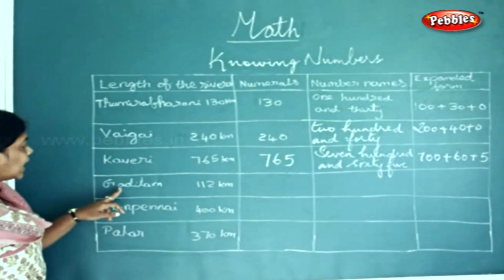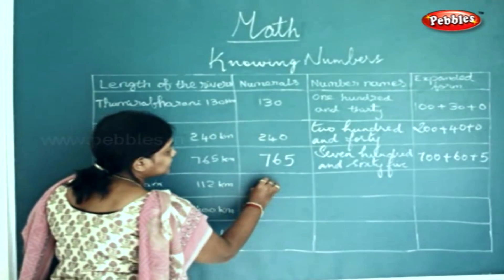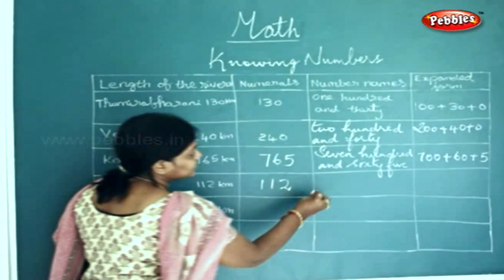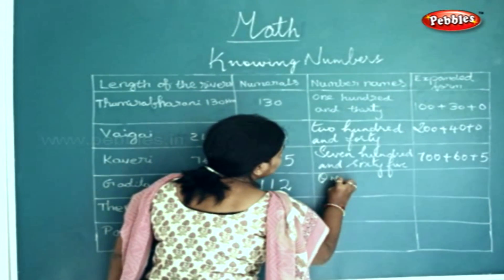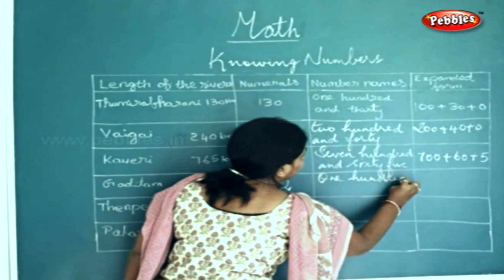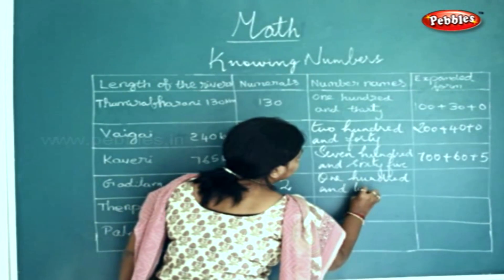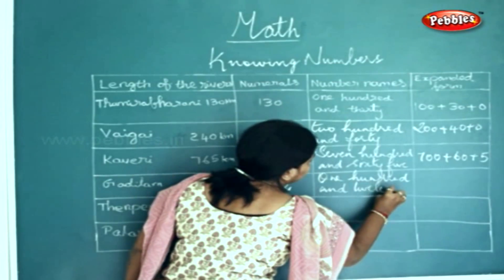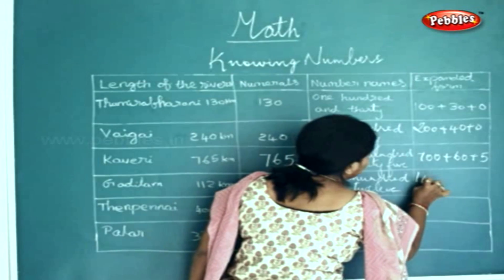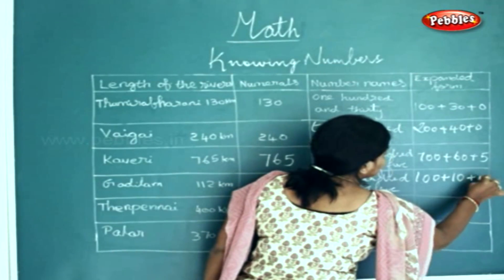The next one is Gardilum, 112 kilometers. For numerals you will write it as 112. In number names it will be written as one hundred and twelve. For the expanded form we will write it as 100 plus 10 plus 2.